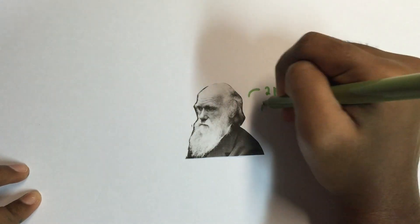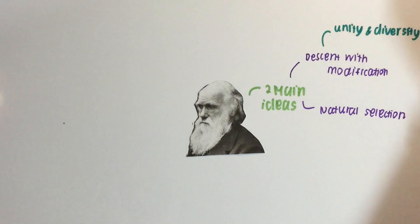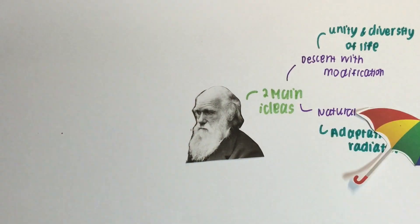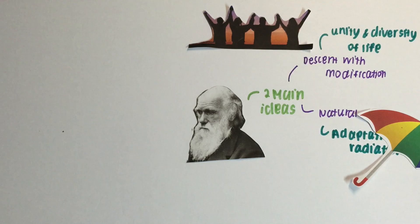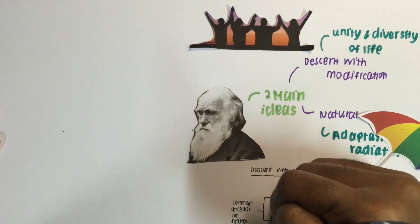To account for his observation, he came up with two ideas: descent with modification and natural selection. The first was used to explain how organisms are related yet different from one another, and natural selection explained how species obtain different traits, even if they have a common ancestor.